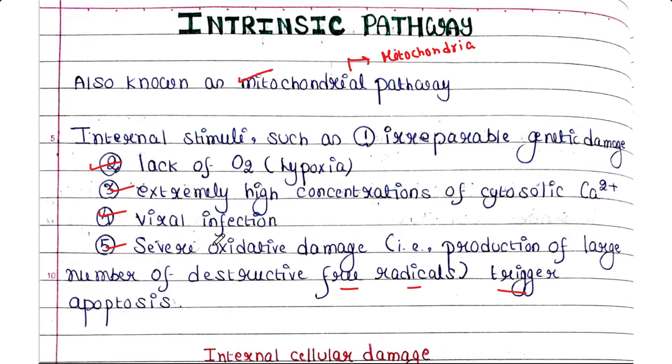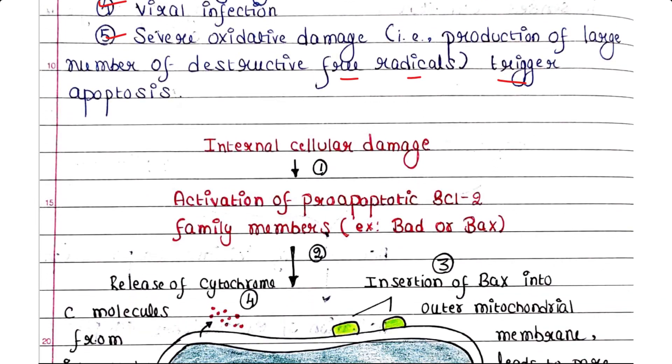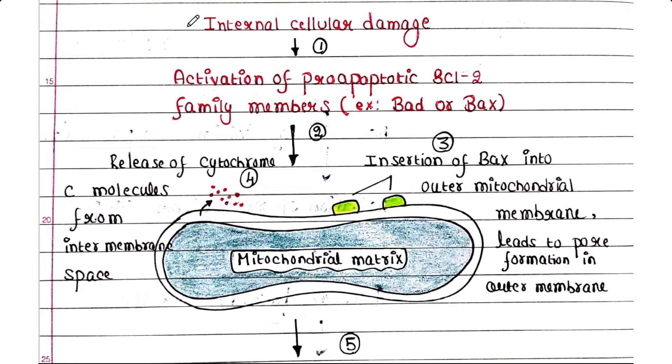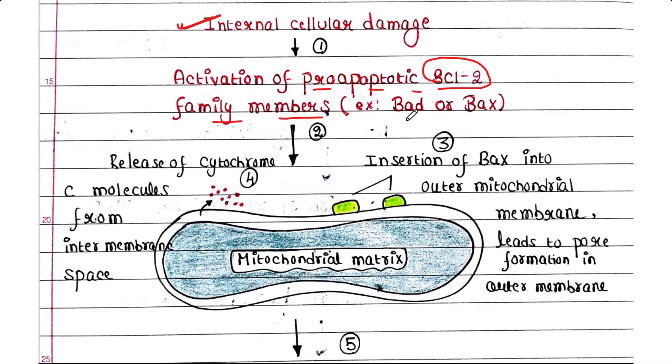Now we will talk about the mechanism. When internal cellular damage occurs inside the cell, they activate the pro-apoptotic Bcl-2 family members, examples are Bad or Bax proteins. These proteins are found in the inactive state inside the cell when there is no need of them.